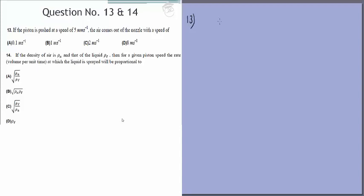This is a simple question based on the equation of continuity. A1 V1 is equal to A2 V2 because the amount of water going in is equal to the amount of water coming out.